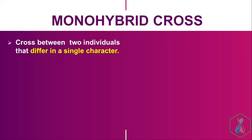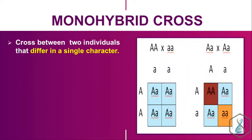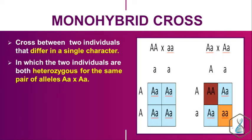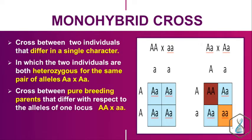What is a monohybrid cross? A monohybrid cross is a cross between two individuals that differ in a single character. For example, for seed color, there can be green and yellow individuals, and the cross between these is called a monohybrid cross. The individuals involved can be heterozygous or pure-breeding homozygous — for example, AA × aa or Aa × Aa. Both are considered monohybrid crosses.